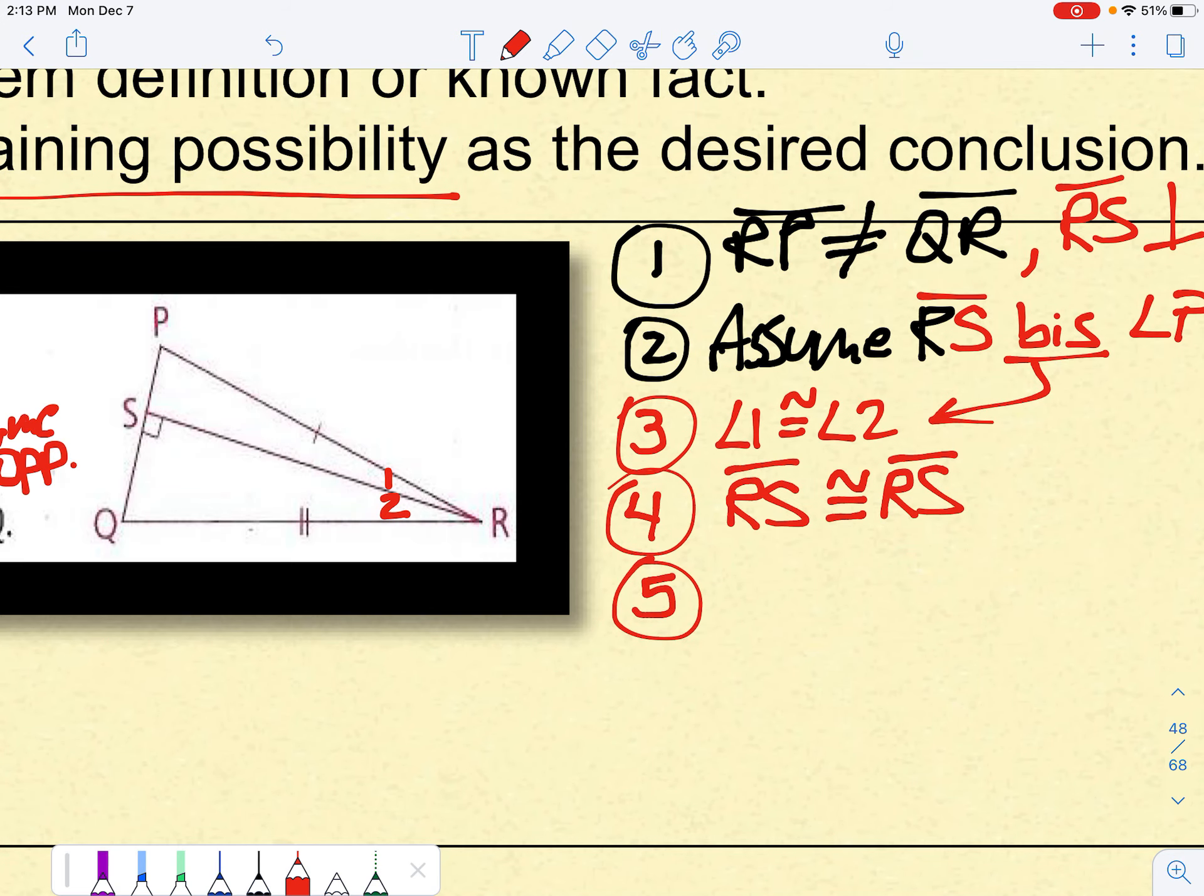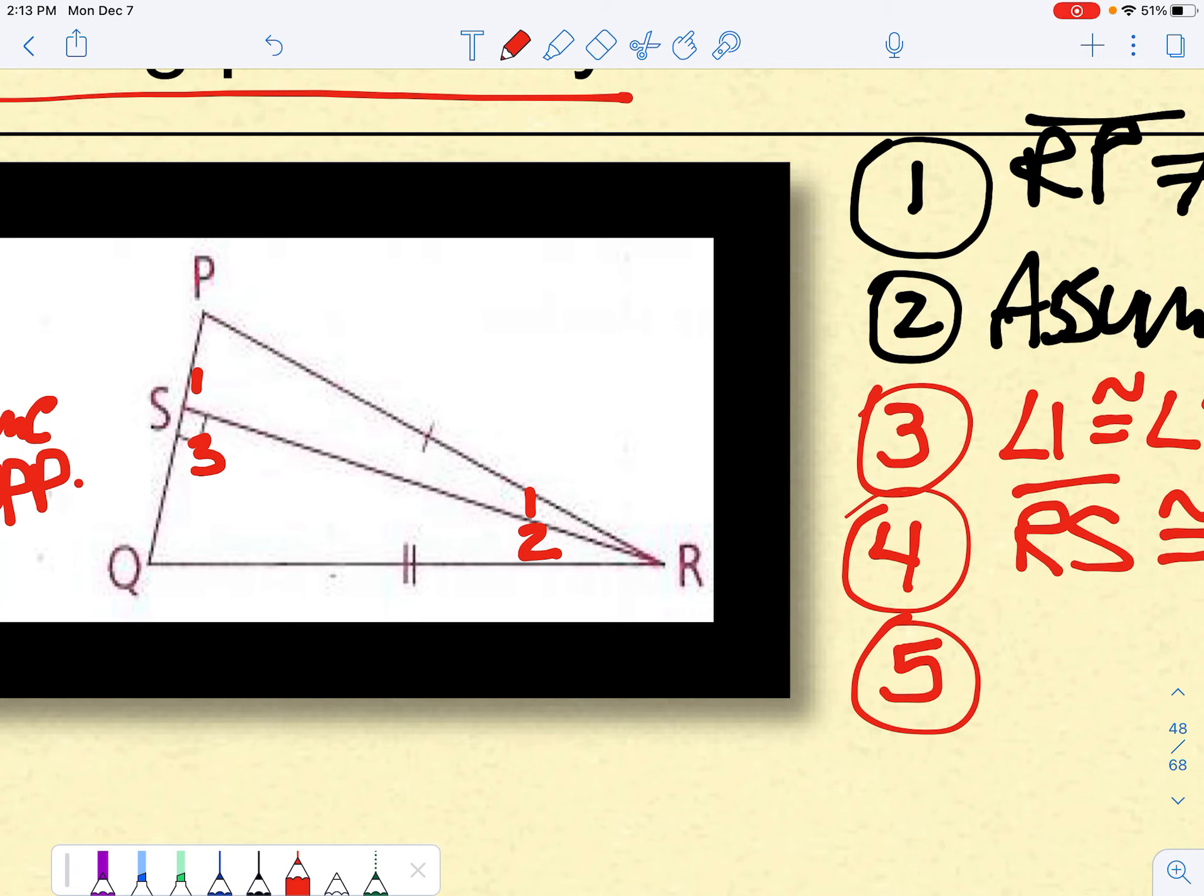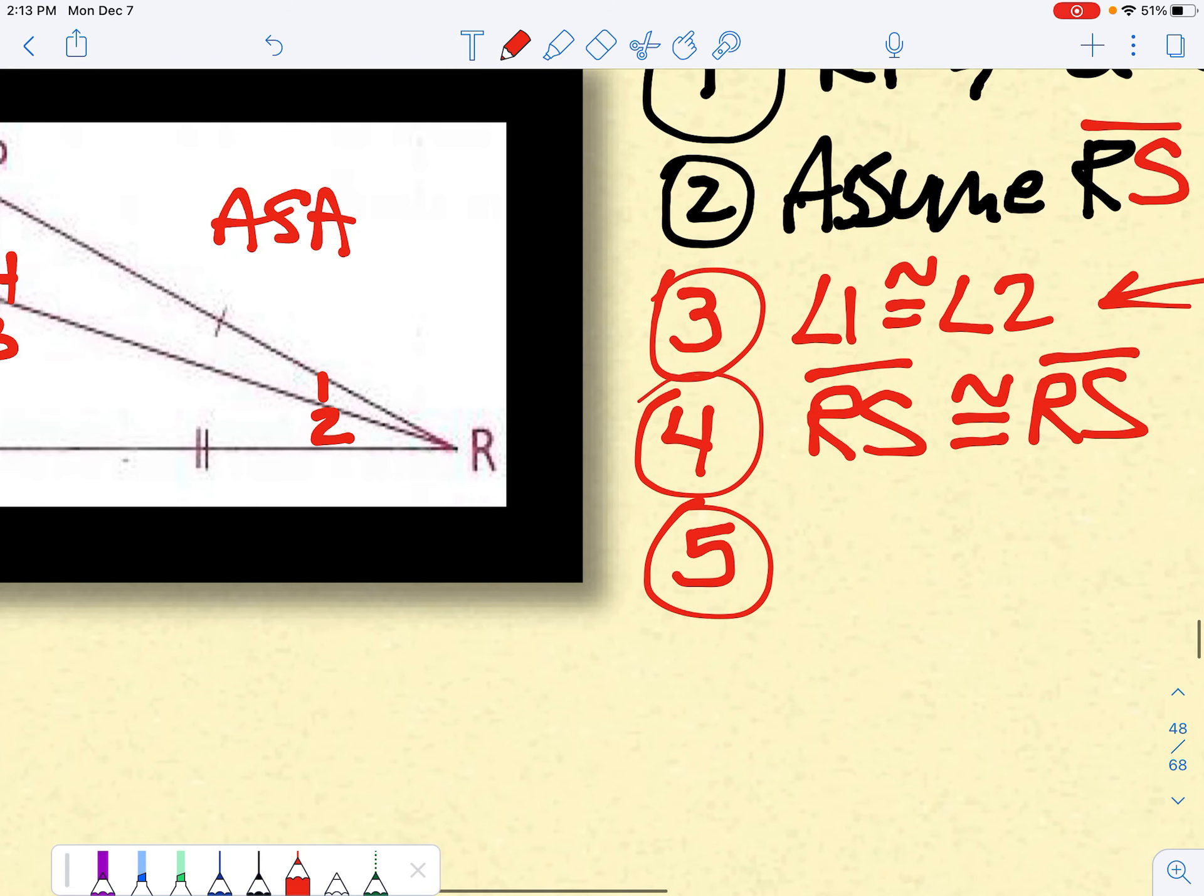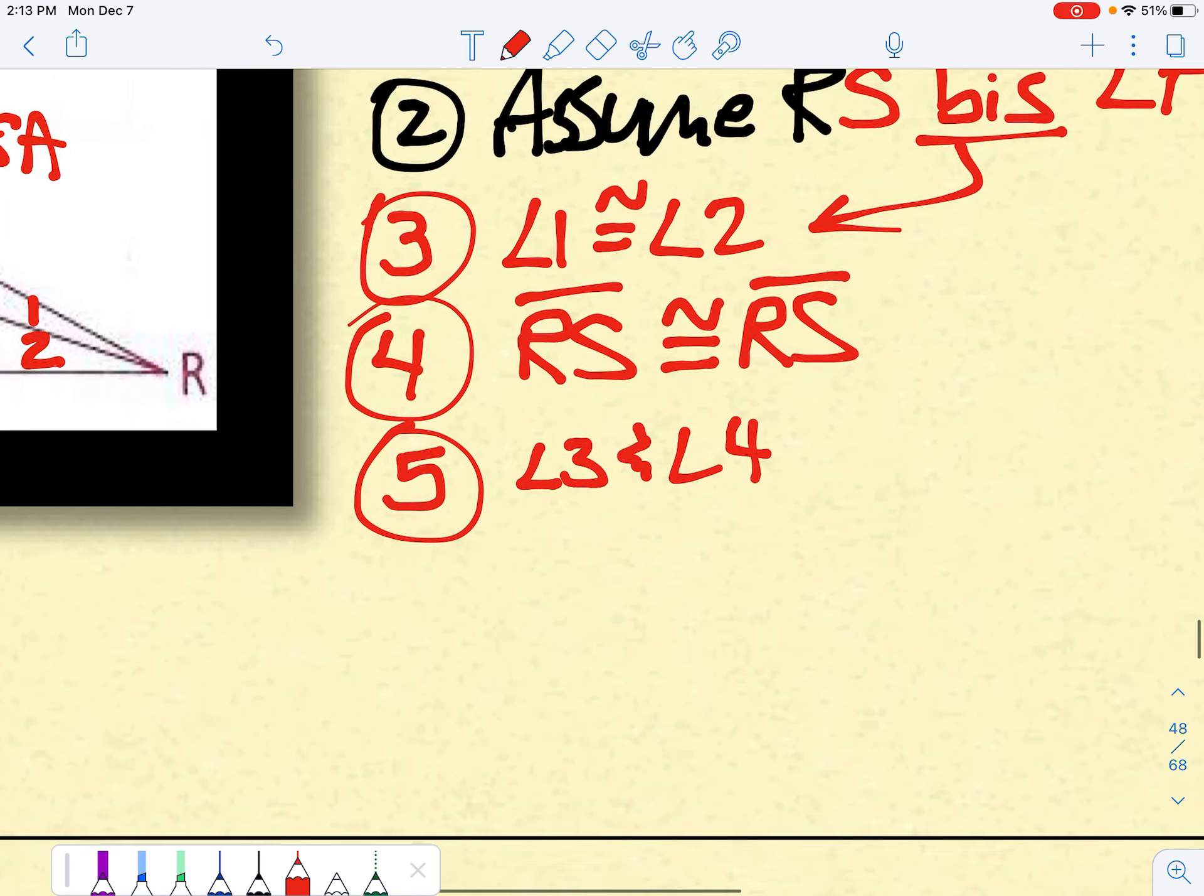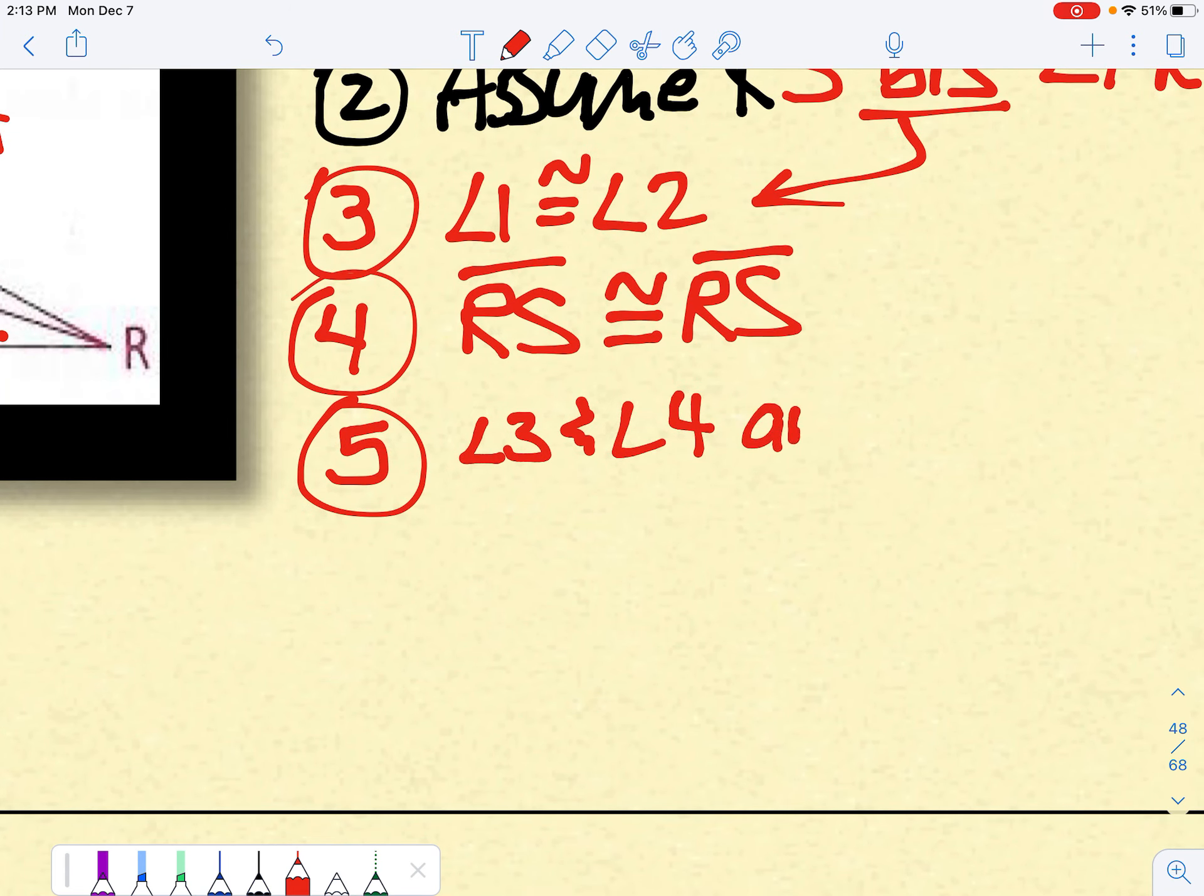Now I come down here and I say, okay, angle three and four. I think I could set up ASA. So first thing I would need to say, angle three and angle four are right angles. How do I know they're right? Because by definition of perpendicular, those angles have to be right.